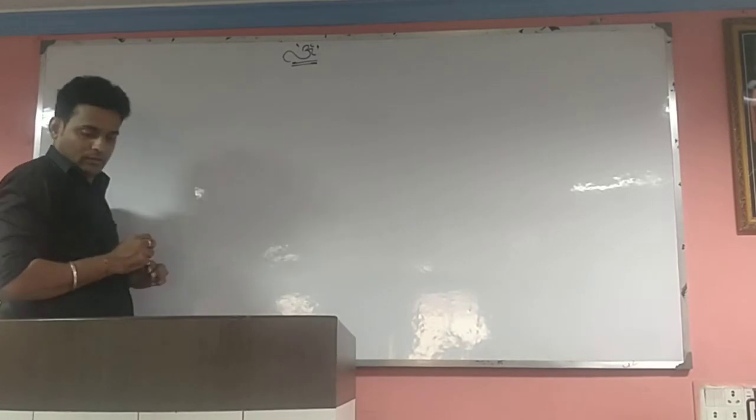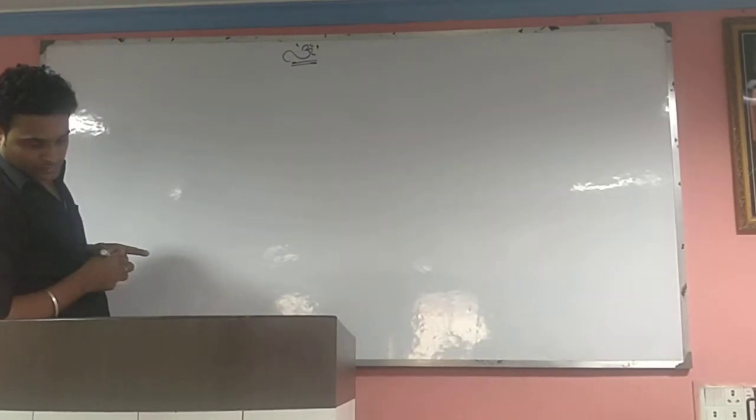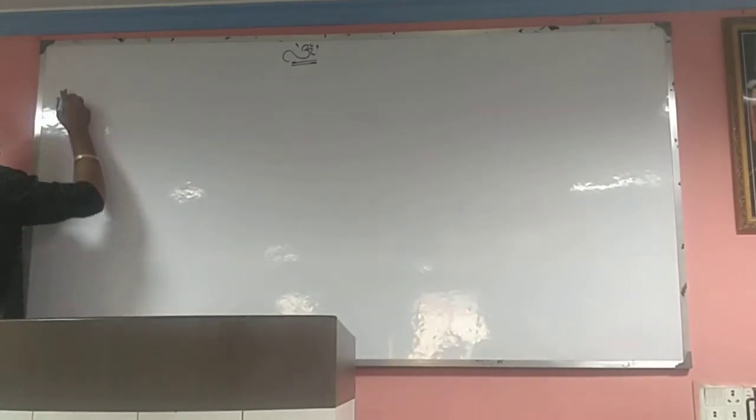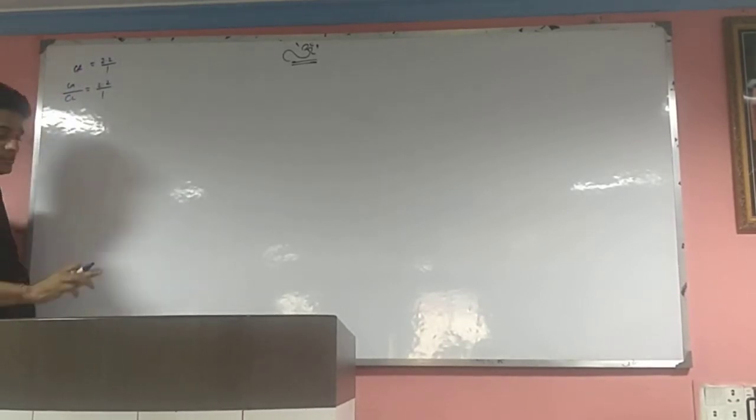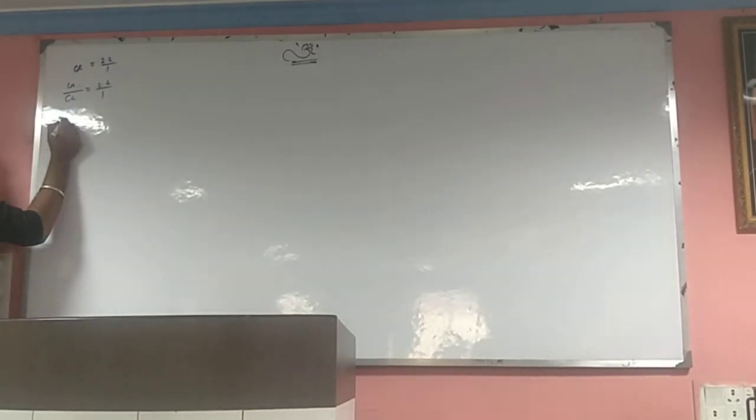Current ratio is given as 2.2:1. You know current ratio is CA by CL. Now, do we have CA? No, nothing is given. Do we have CL? No, nothing given.